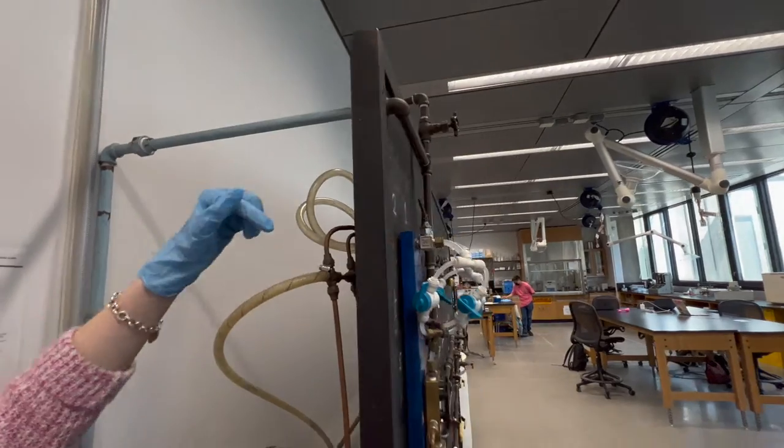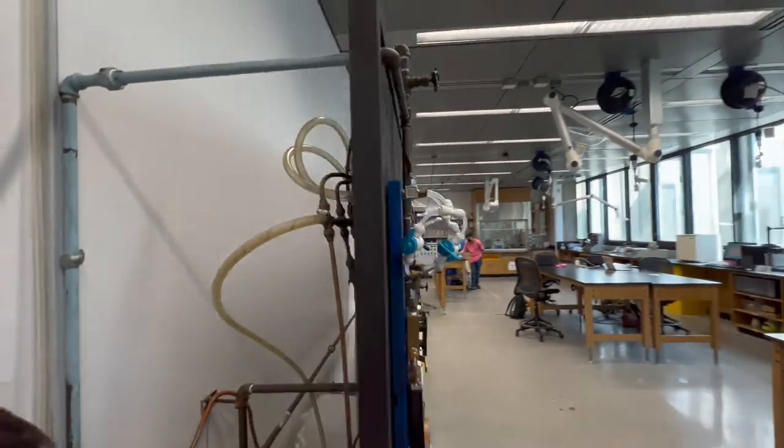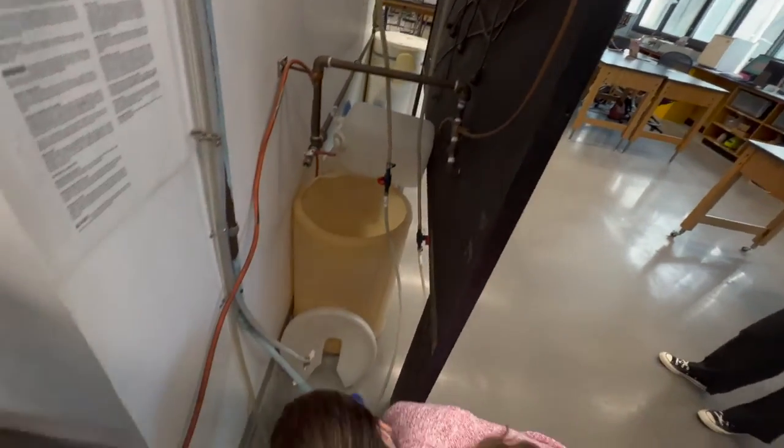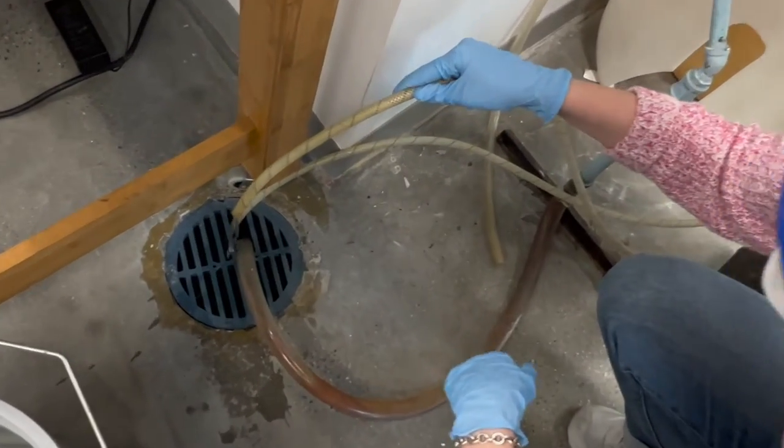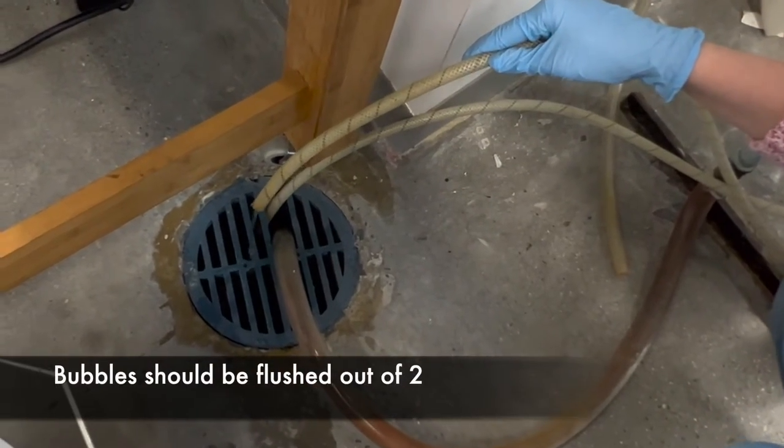So after it comes down to one, it'll follow this pipe. And there should be water here. So that is how we would flush out two.